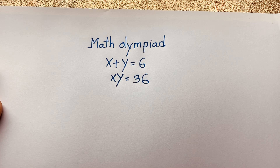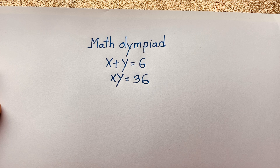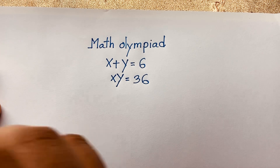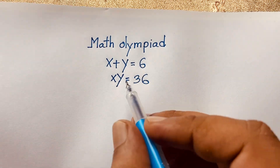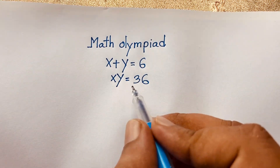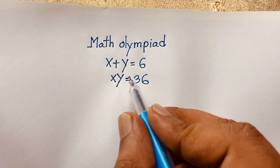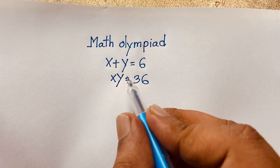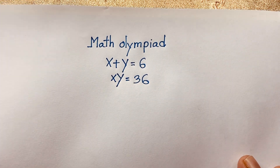Hello everyone, welcome to Rasha's classroom. Today we have solved a nice interesting math Olympiad question, which is x plus y is equal to 6, and x times y is equal to 36. We will find out what is the value of x and y in this math Olympiad question.